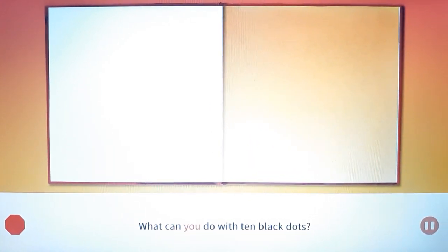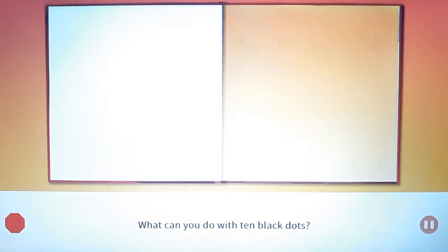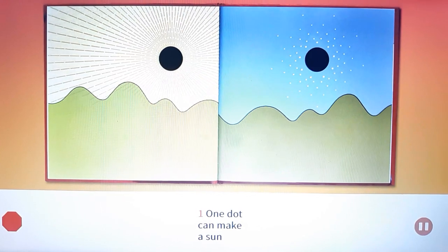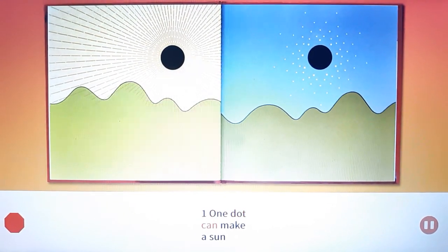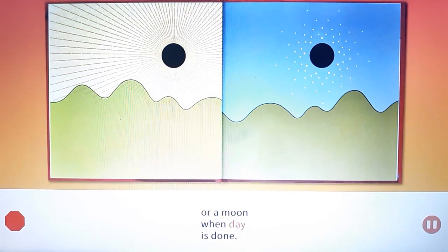What can you do with 10 black dots? One. One dot can make a sun or a moon when day is done.